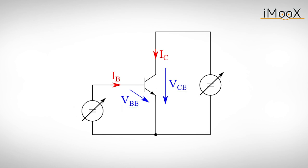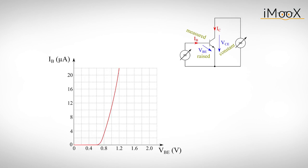For our first measurement, we keep VCE constant and slowly raise the base emitter voltage VBE. We measure the base current IB as we do so and get the so-called input characteristic of a bipolar transistor. You may recognize this characteristic as the behavior of a forward biased diode, which makes a lot of sense if you remember the simplified diode circuit from our last video.